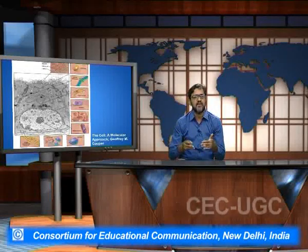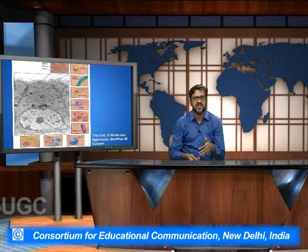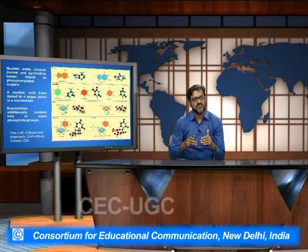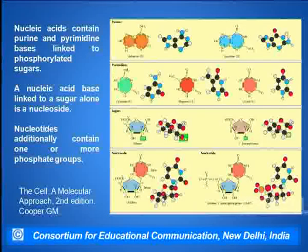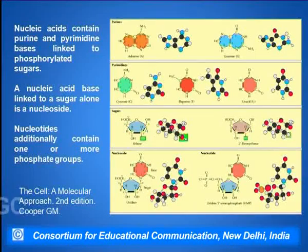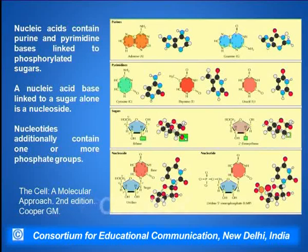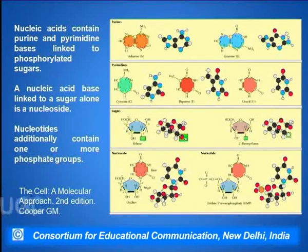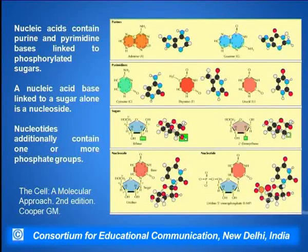We will be taking up all these organelles in subsequent slides in much more detail. The basic entity of the cells is present within the nucleus, and the nucleus contains the nucleic acids. Nucleic acids are the purine and pyrimidine bases which are linked to one another with the help of phosphorylated sugars. A nucleic acid base linked to the sugar base is called the nucleoside.